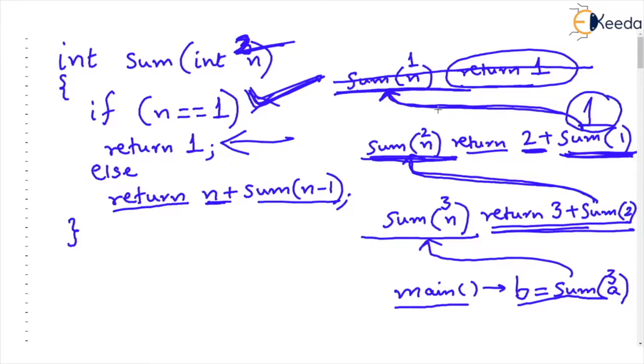And now the calling function will resume saying that okay now I will return 2 plus 1, 2 plus 1 which is 3 and as it returns 3 the function also ends.